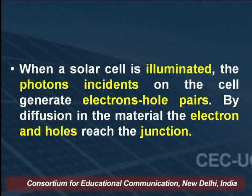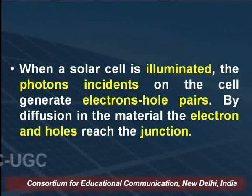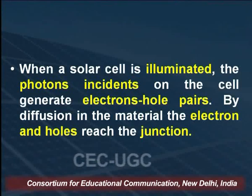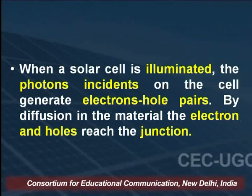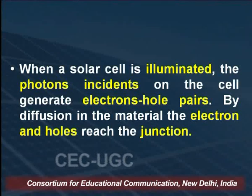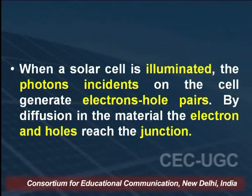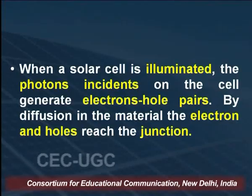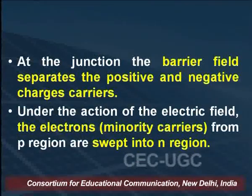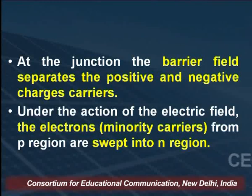When the solar cell is illuminated — meaning when photons of a particular intensity are incident on the cell — the cell panel generates electron-hole pairs. As light falls upon the solar cell, electron-hole pairs are generated. By diffusion in the material, the electrons and holes reach the junction between the N and P layers. At the junction, the barrier field separates the positive and negative charge carriers.